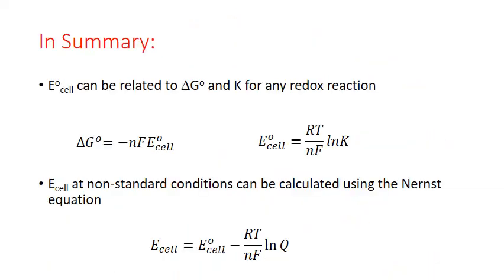In summary, the standard electrochemical cell potential can be related to standard Gibbs free energy and the equilibrium constant K for any redox reaction. The electrochemical cell potential at non-standard conditions can be calculated using the Nernst equation.